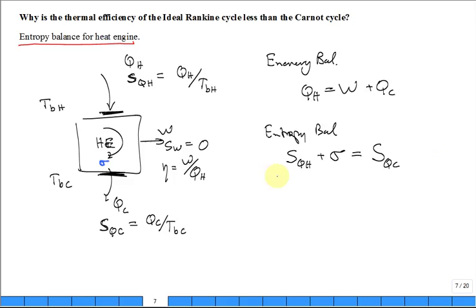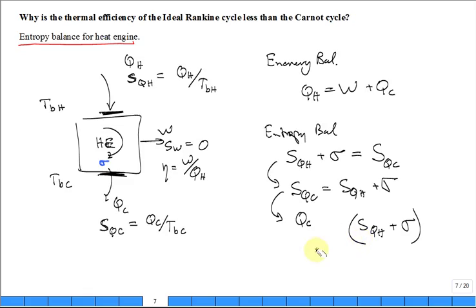So we can say from the entropy balance, SQC is equal to SQH plus sigma. We can then say, SQC is QC divided by TBC. So we find that QC, that how much you have to throw away, is TBC times how much you brought in and how much was generated. True or false?